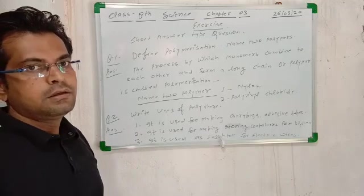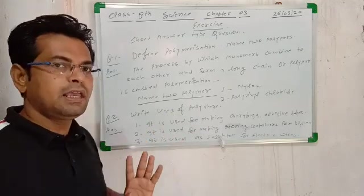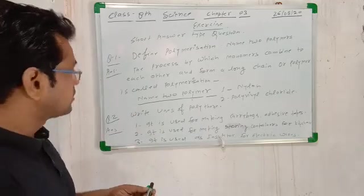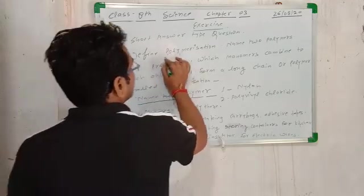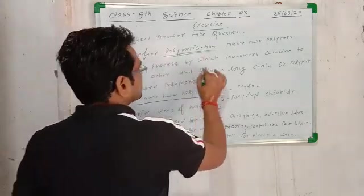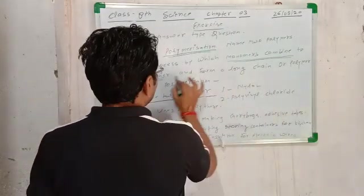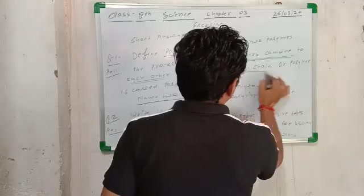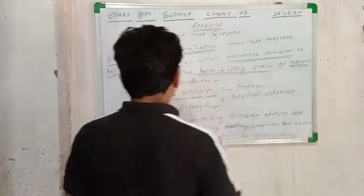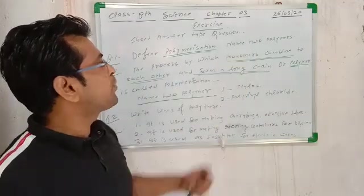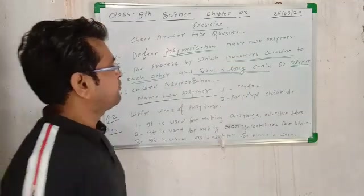This is called polymerization. Monomers combine to each other and form a long chain or polymer. Two polymers are nylon and polyvinyl chloride.